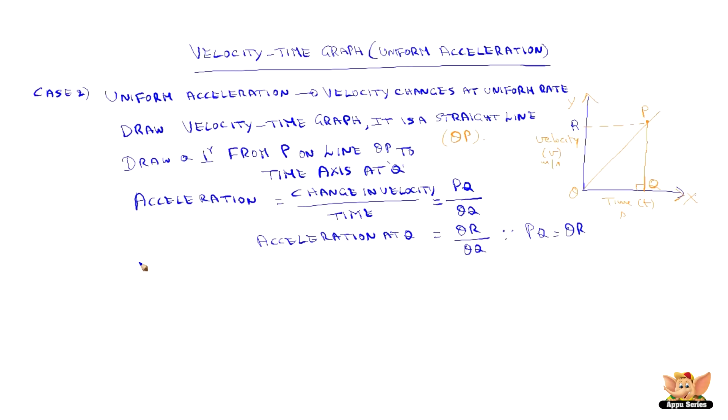Now to find out the distance traveled by the body is defined as the area enclosed by the curve on velocity-time graph with the time axis OQ.